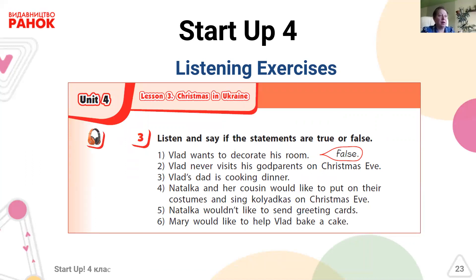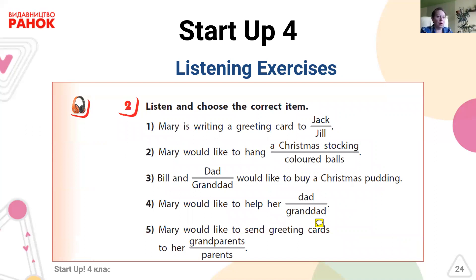There is also the true-false exercise, which is common in both primary and secondary school. Pupils listen and decide if the statement is true or false, and mark it in a special way. Our textbook includes all these possible tasks. Here is one more example of multiple choice where pupils have to choose between two options. This task is really useful for developing listening skills and understanding of the foreign language.